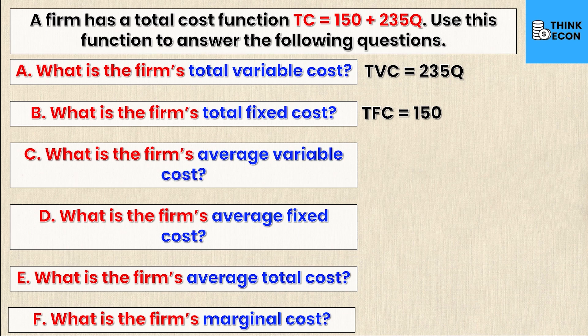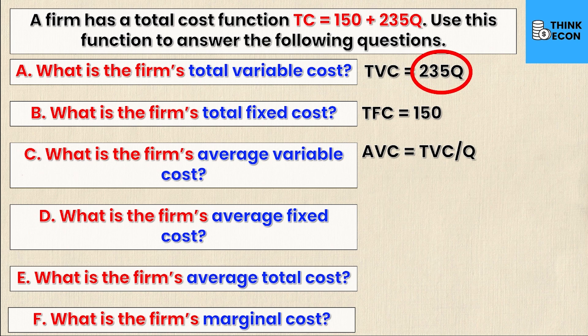Now let's take a look at part C. What is the firm's average variable cost? Well, we know that average variable cost is total variable cost divided by Q. And we know the total variable cost because we just calculated it. It's 235Q. So substituting that in, we get average variable cost is equal to 235Q divided by Q. And obviously Q over Q is just one, so they cancel out. And that gives me a value of 235 for my average variable cost.